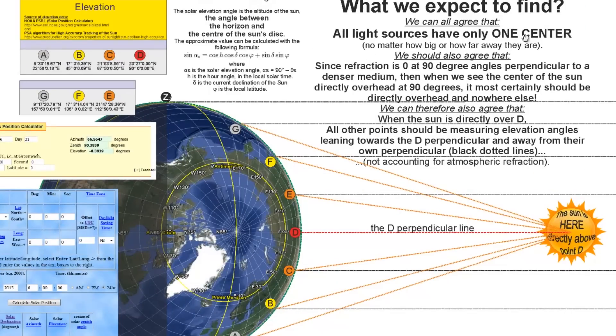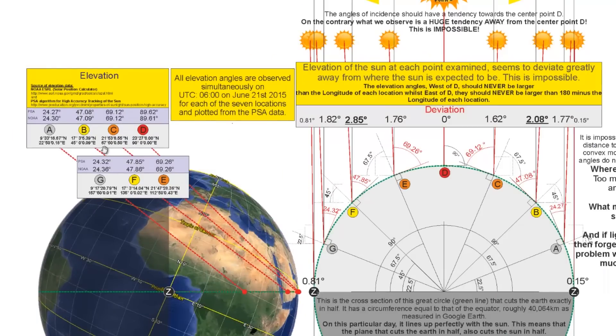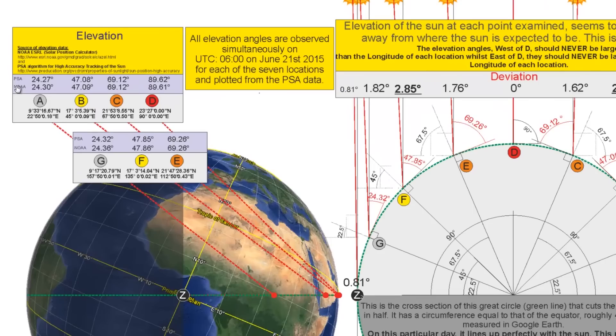What we expect to find? We can all agree that all light sources have only one center, no matter how big and how far they are. We should also agree that since refraction is zero at 90 degree angles perpendicular to a denser medium, like the atmosphere, then when we see the center of the Sun directly overhead at 90 degrees, it most certainly should be directly overhead and nowhere else. We can therefore also agree that when the Sun is directly over D, all other points should be measuring elevation angles leaning towards the D perpendicular and away from their own perpendicular black dotted lines. And this is not accounting for atmospheric refraction. The elevation angles calculated are as follows from the PSA and from NOAA respectively.